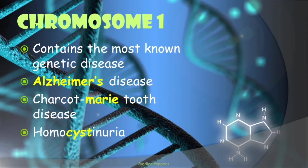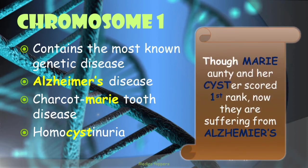Here's how to remember these easily. Imagine two characters — Mary auntie and her sister — who scored very good rank, mainly first rank, during their younger age. Once they became older, they were suffering from Alzheimer's disease, having difficulty remembering everything. So 'Mary' indicates Charcot-Marie-Tooth disease, 'sister' indicates Homocysteinuria, 'Alzheimer's' for Alzheimer's disease, and 'first rank' for chromosome number 1.